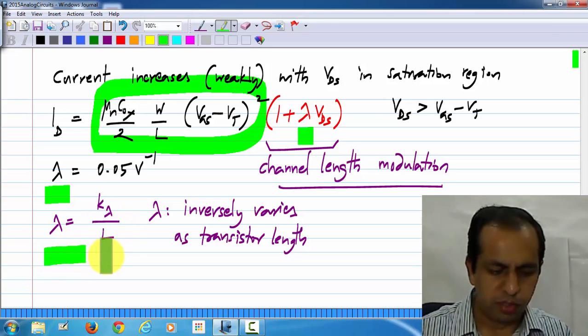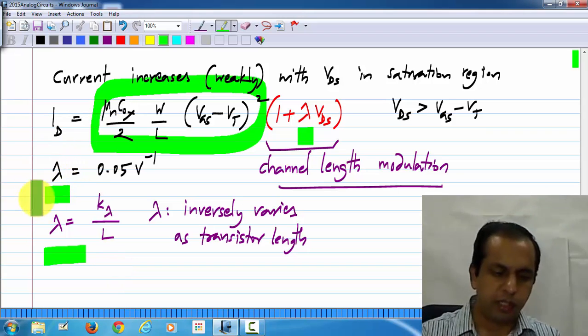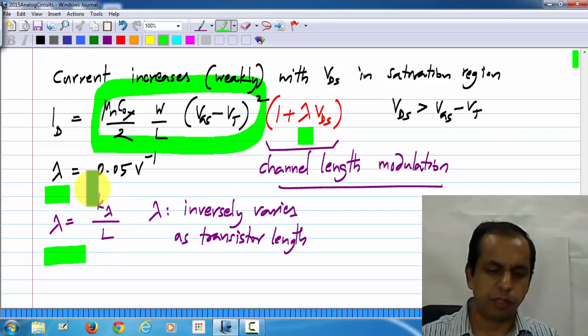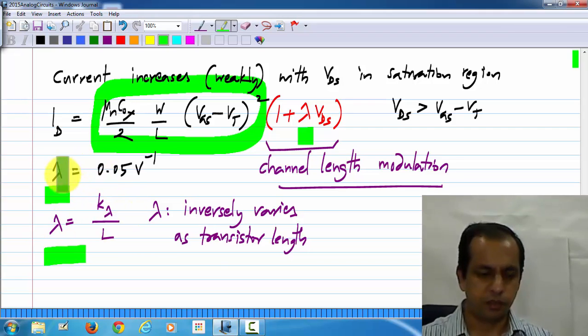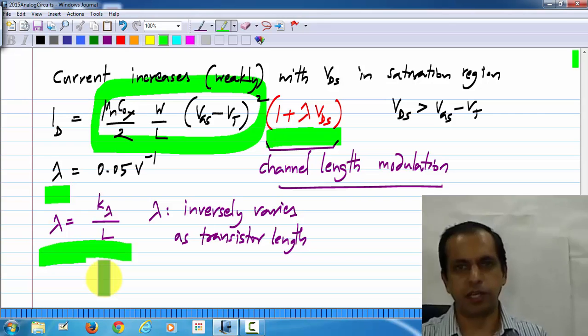And this k_lambda is some proportionality constant. Again, do not worry about exactly why these things come about. Usually, in this course, lambda itself will be given, or if it is given in this form, the k_lambda will be given. So, as far as we are concerned, we have to model it in the correct way using this expression, and possibly this one if necessary.